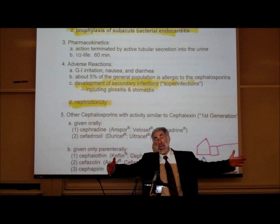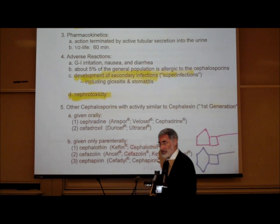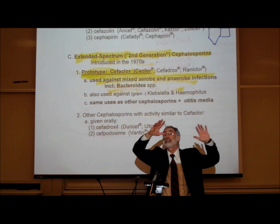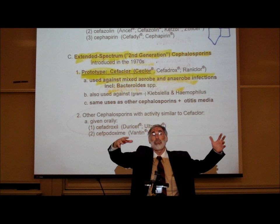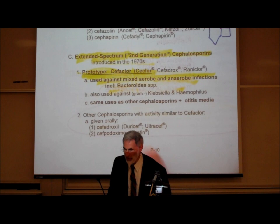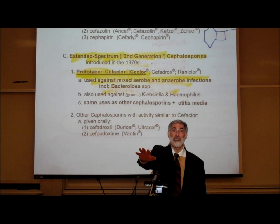Because of its broad spectrum of action, you always have to worry about the development of opportunistic secondary infections. Just like penicillin, cephalosporins are nephrotoxic. They created broader spectrum cephalosporins by changing the side chain, just as they had with penicillins, creating second and third generation cephalosporins. An example of a second generation cephalosporin with a broader spectrum is Ceclor.